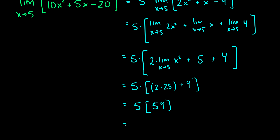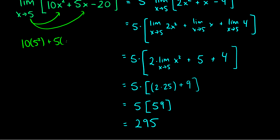So this is five times fifty plus one, which is five times fifty-one, giving two hundred fifty-five. That's showing all the limit laws applied step by step. Now, it really is faster to just plug five in directly. I did make a mistake earlier — it should be minus four throughout, giving plus one, which gives fifty-one, and therefore two hundred fifty-five.